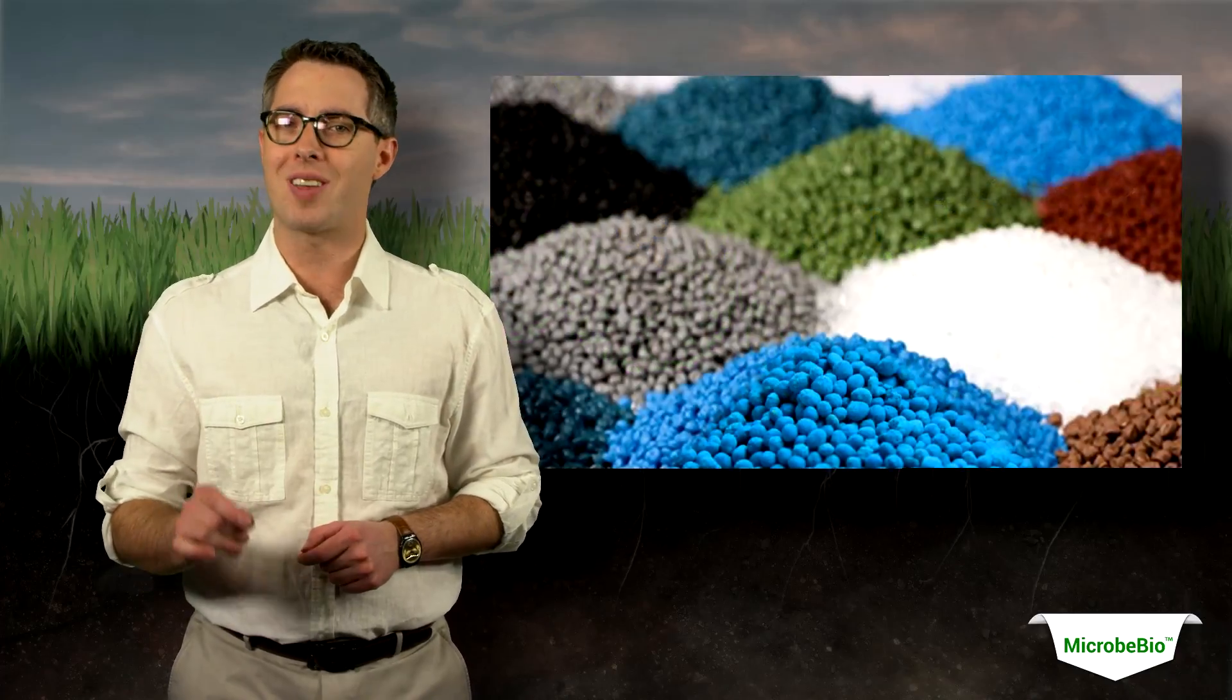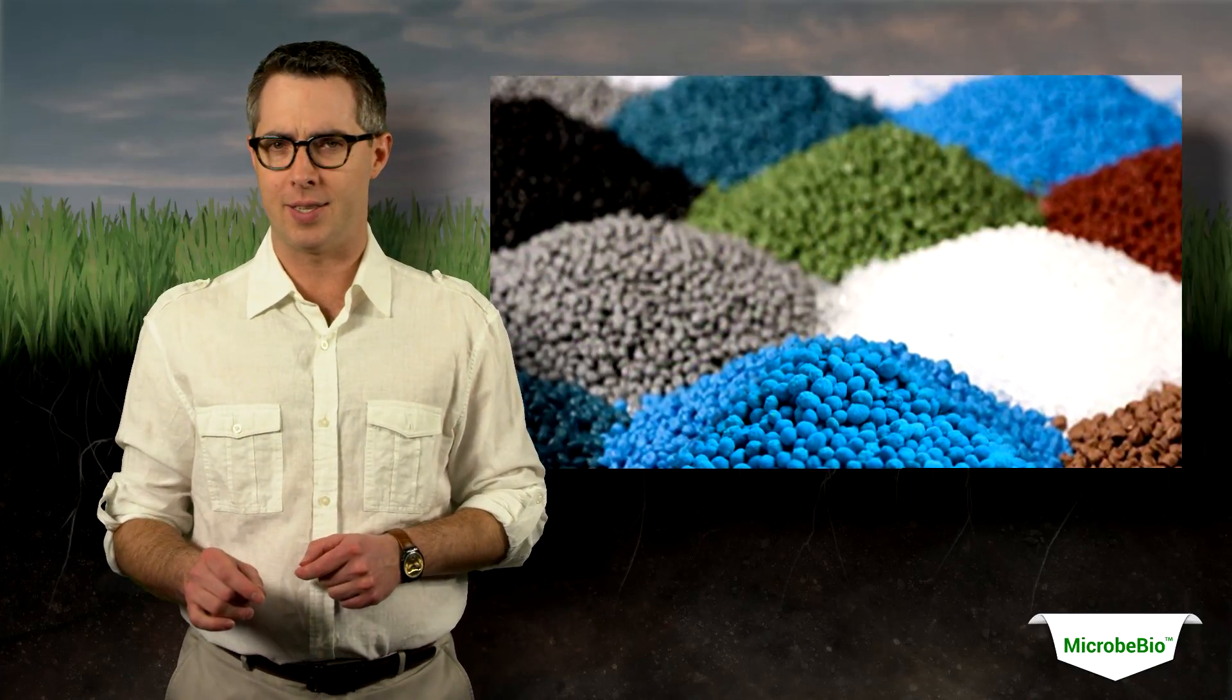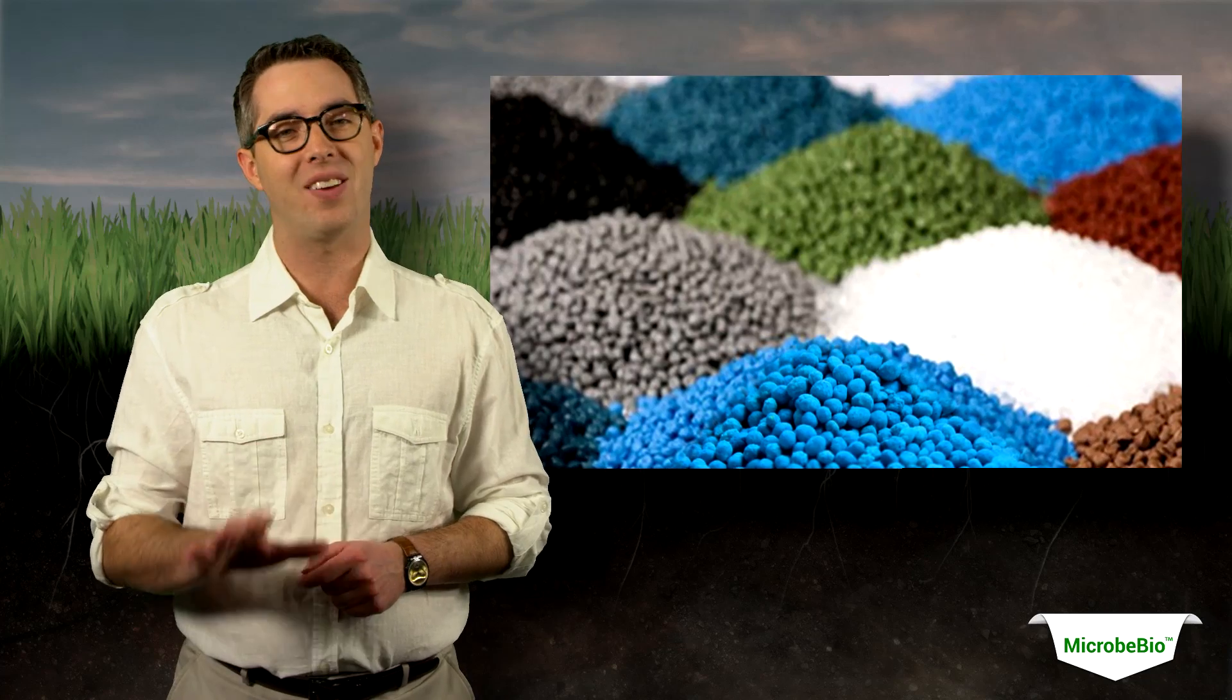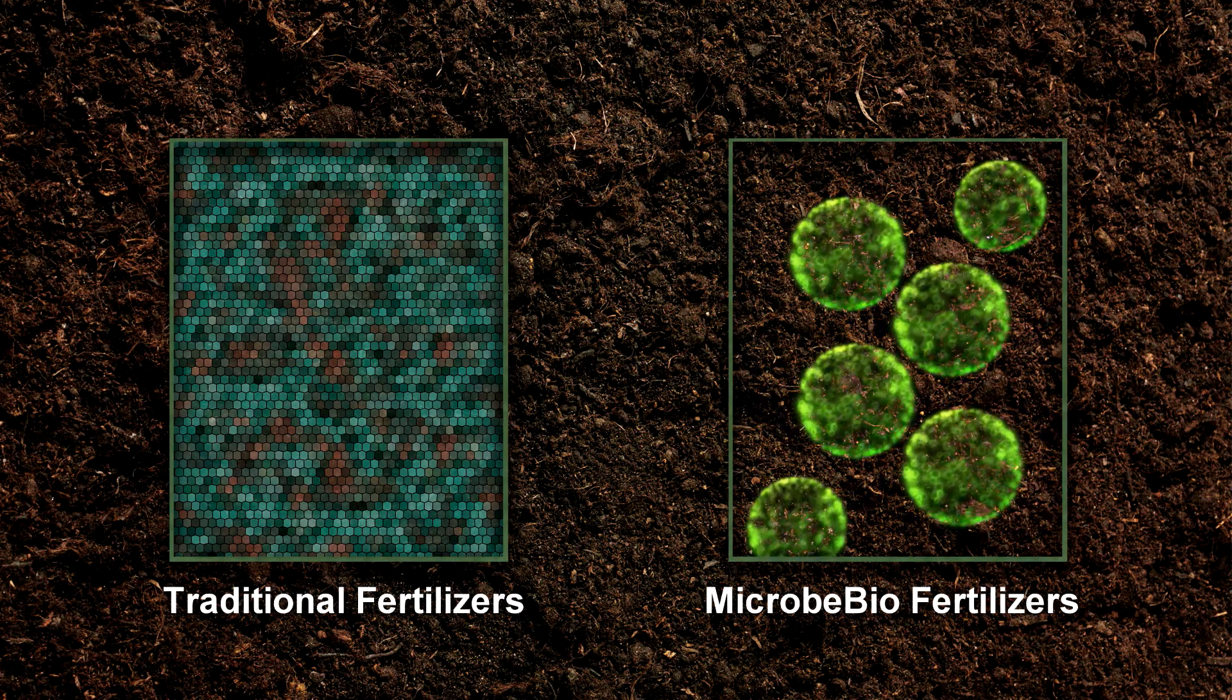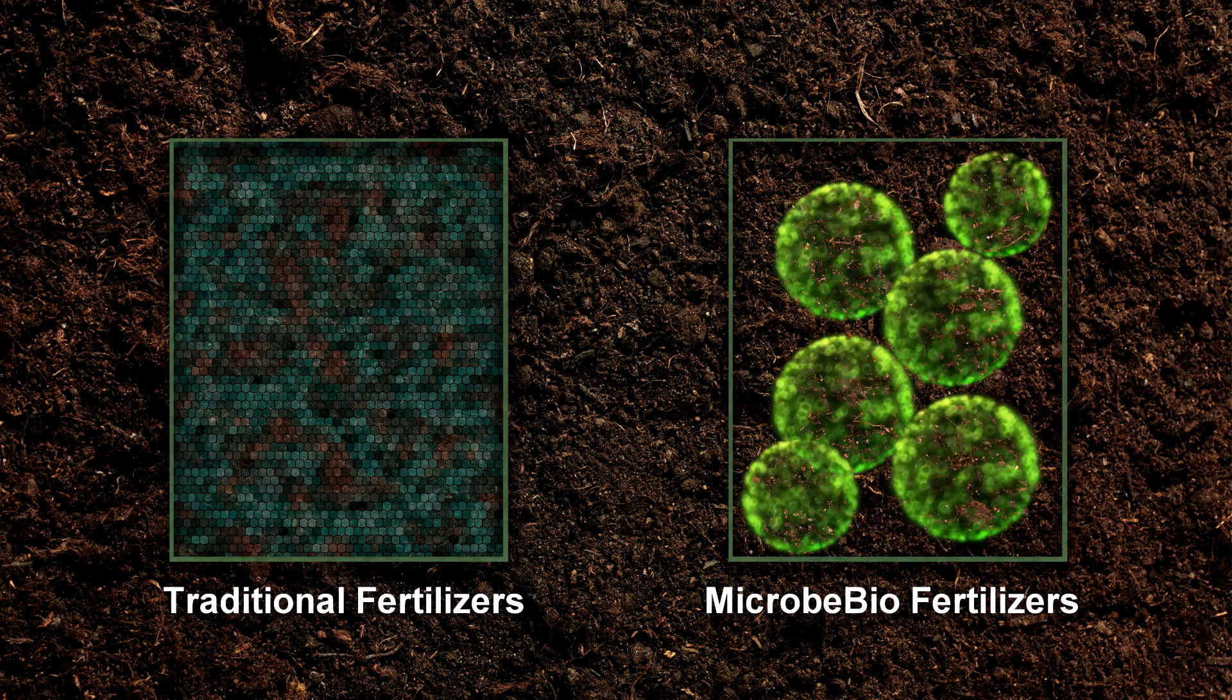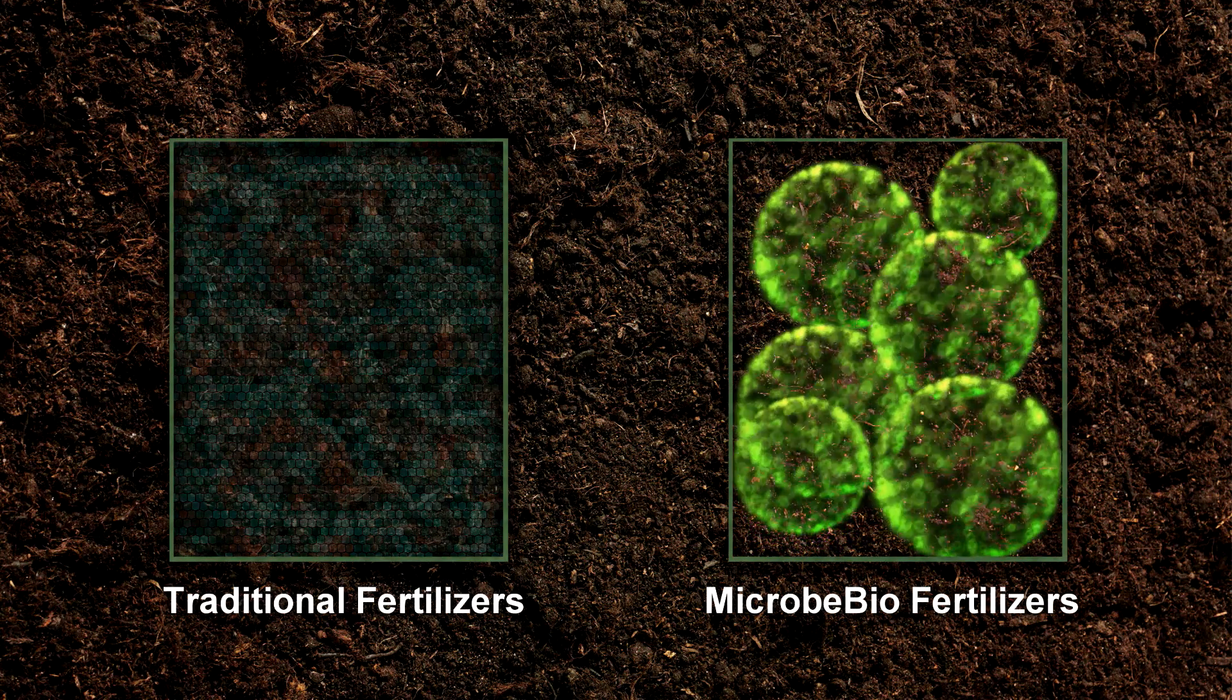When you use synthetic or chemical fertilizers and pesticides, it kills off all the beneficial organisms in the soil, including the ones that can release the nutrients that aren't soluble. This is why you have to continually apply chemical fertilizer to feed your plants.